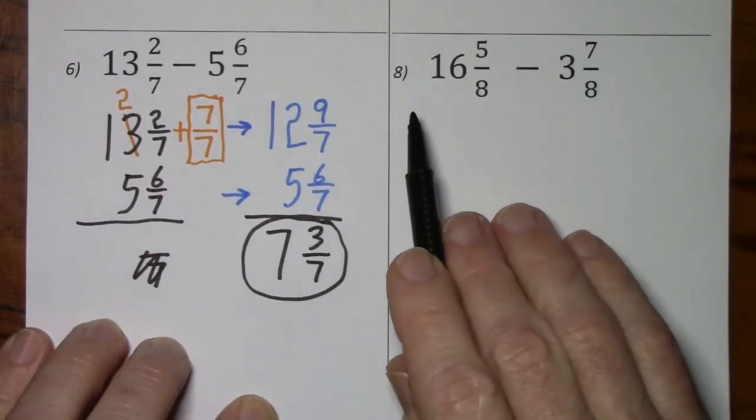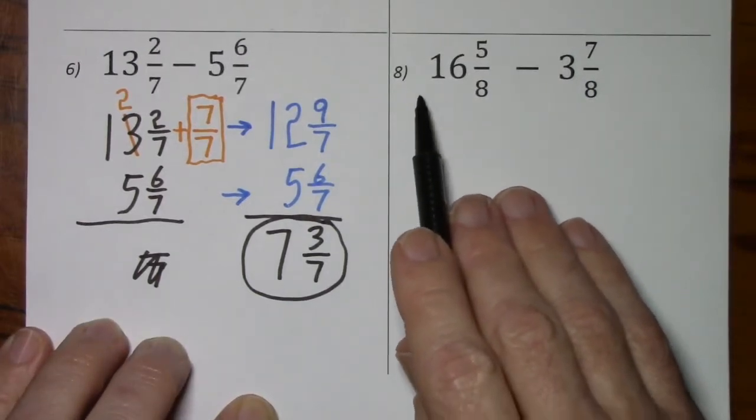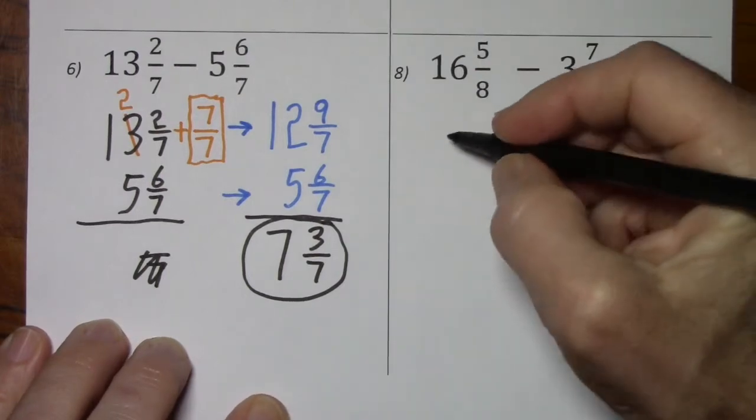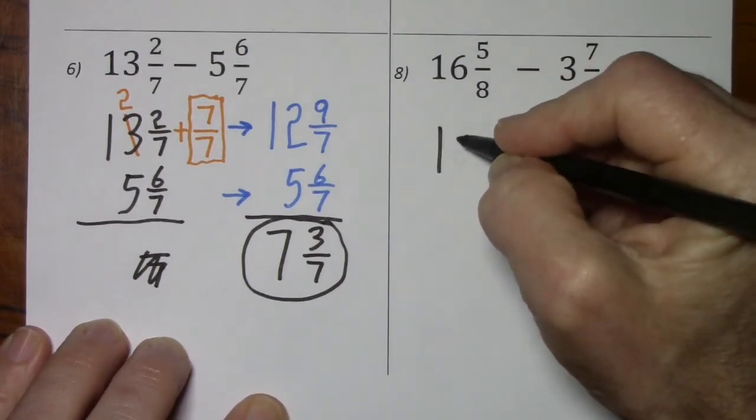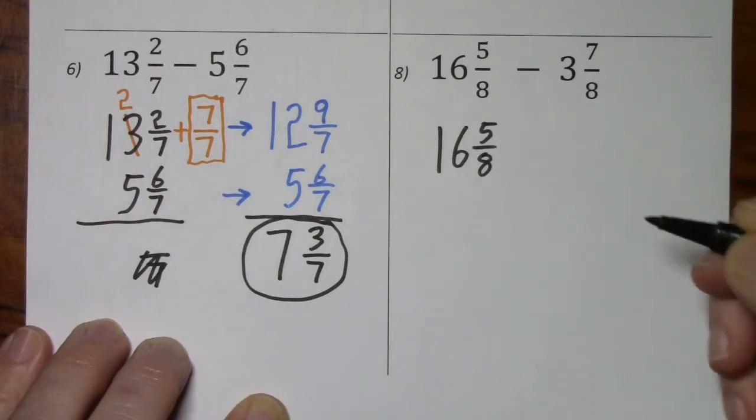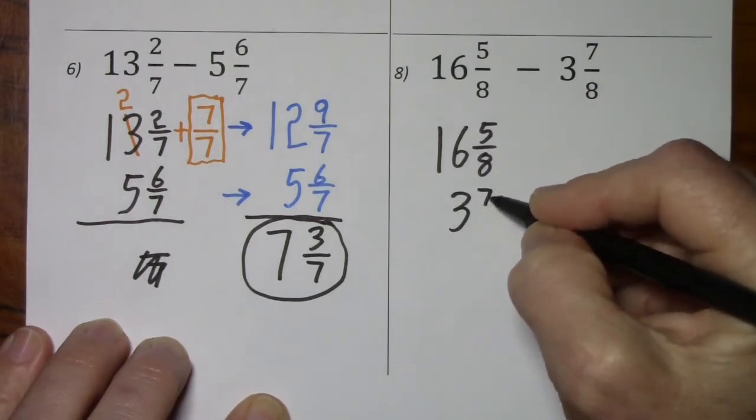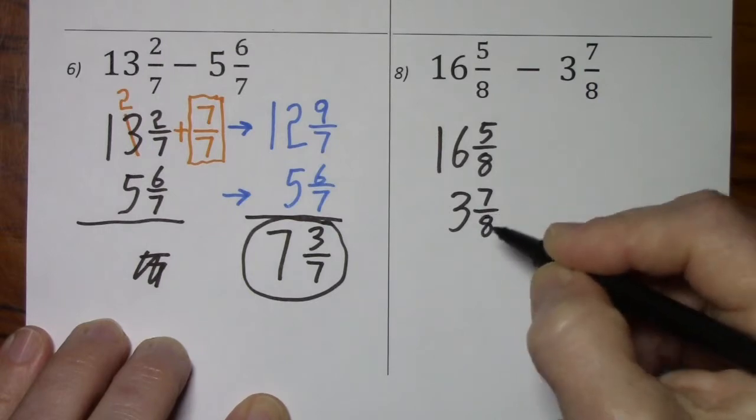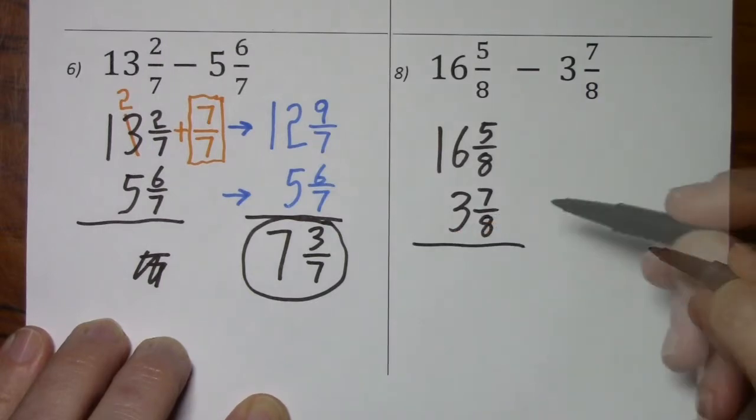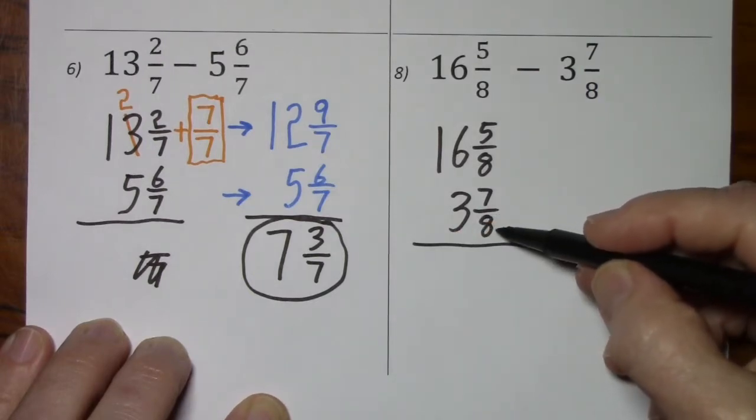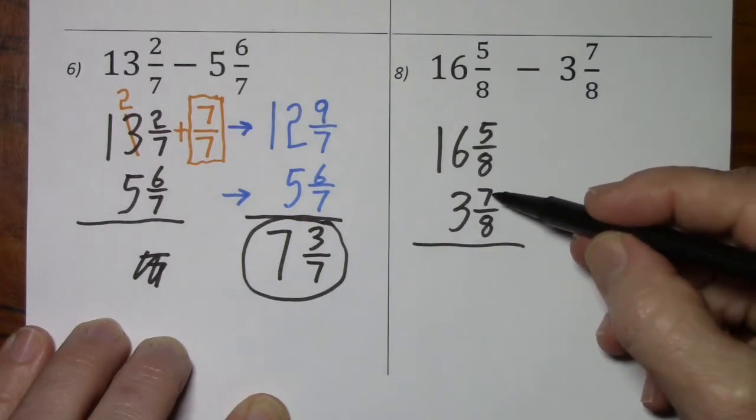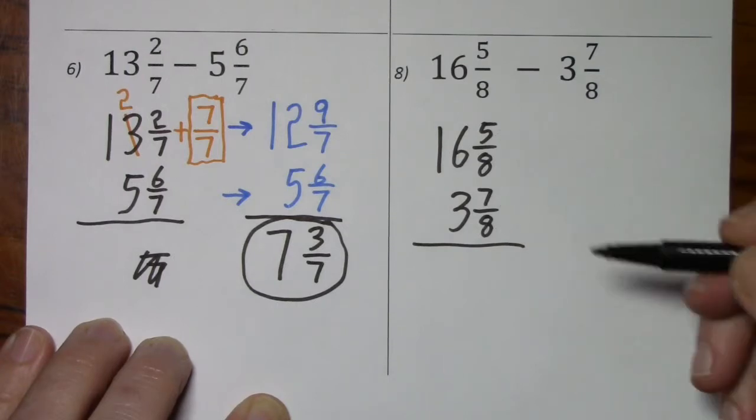Looking at number 8, this is our last problem. The signs are different. We will subtract. Careful to put the larger number on top. We would keep the denominator of 8. But when you try subtracting, you can't subtract 7 from 5.